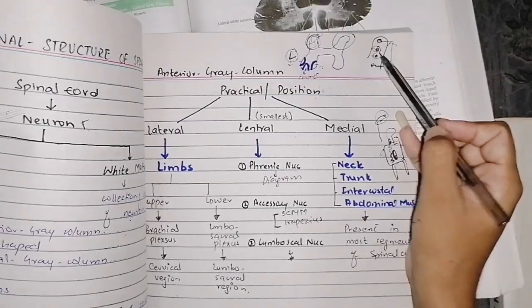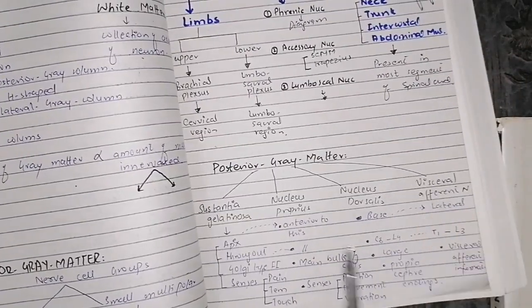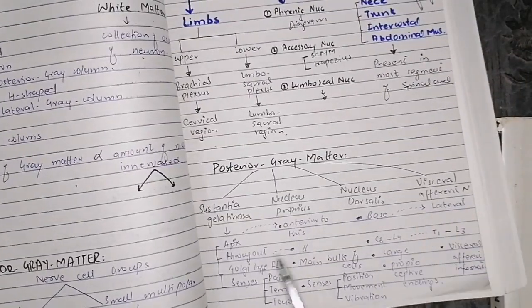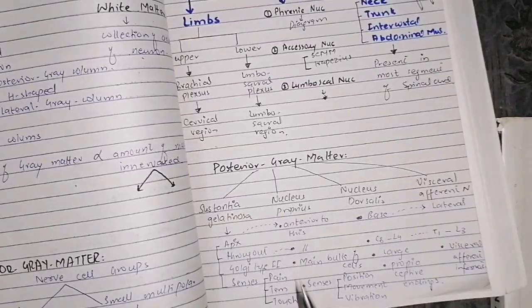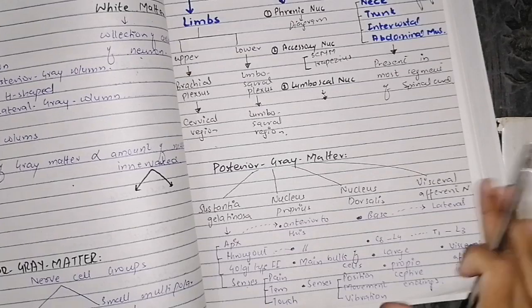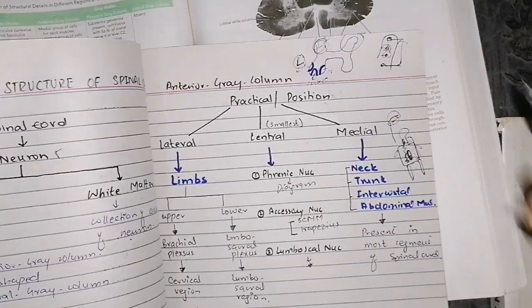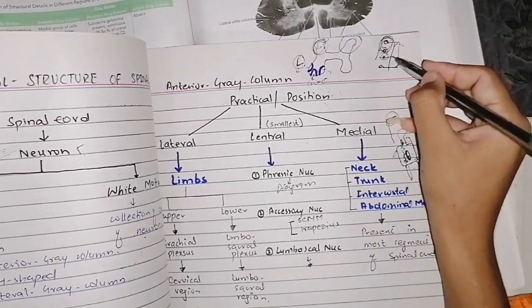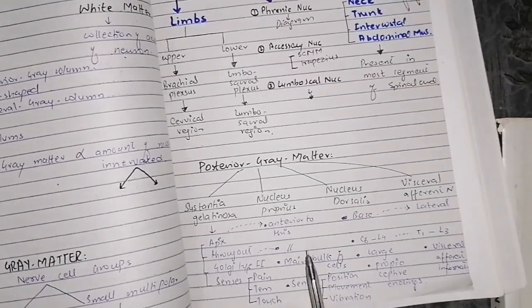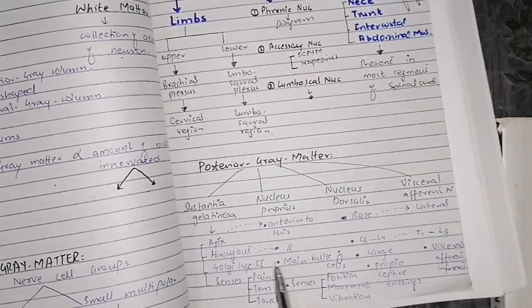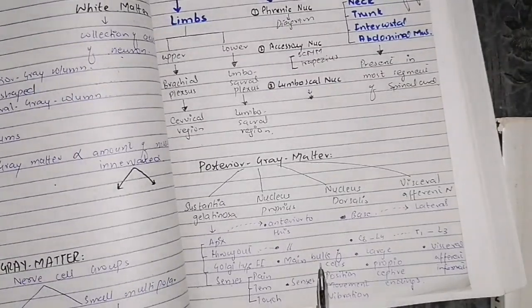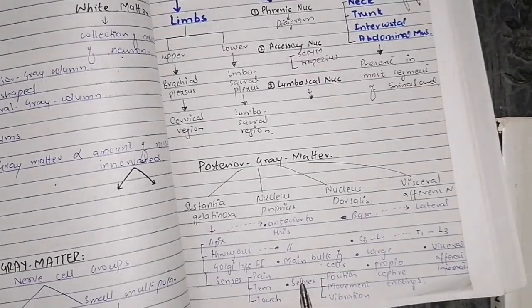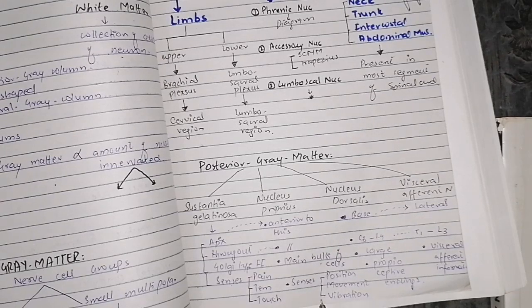The second nucleus is nucleus proprius, also present throughout the spinal cord. It forms the bulk of cells in the posterior gray matter. It senses position, movement, and vibration.